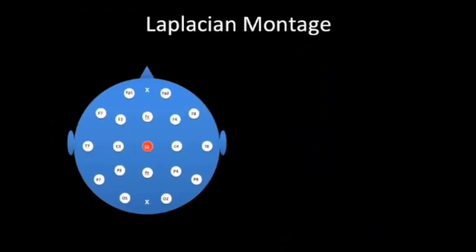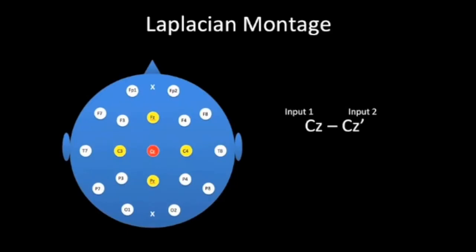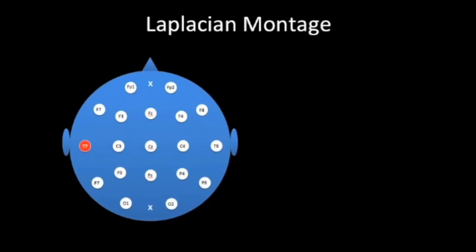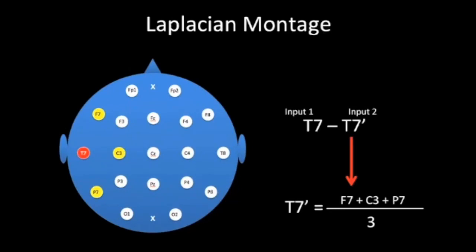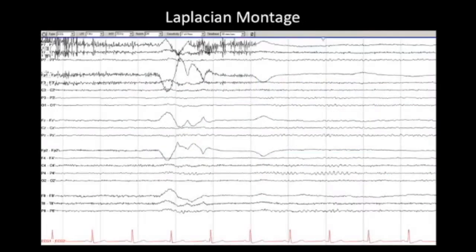One way to avoid reference contamination is to use the Laplacian montage, where we compare one electrode position to an average of its nearest neighbors. For example, we compare Cz to its four closest neighbors — Cz prime being the average of those four adjacent neighbors. Special consideration must be given to electrodes on the edge of the head where there are fewer adjacent neighbors; for example, T7 prime is derived from an average of its three most adjacent neighbors.